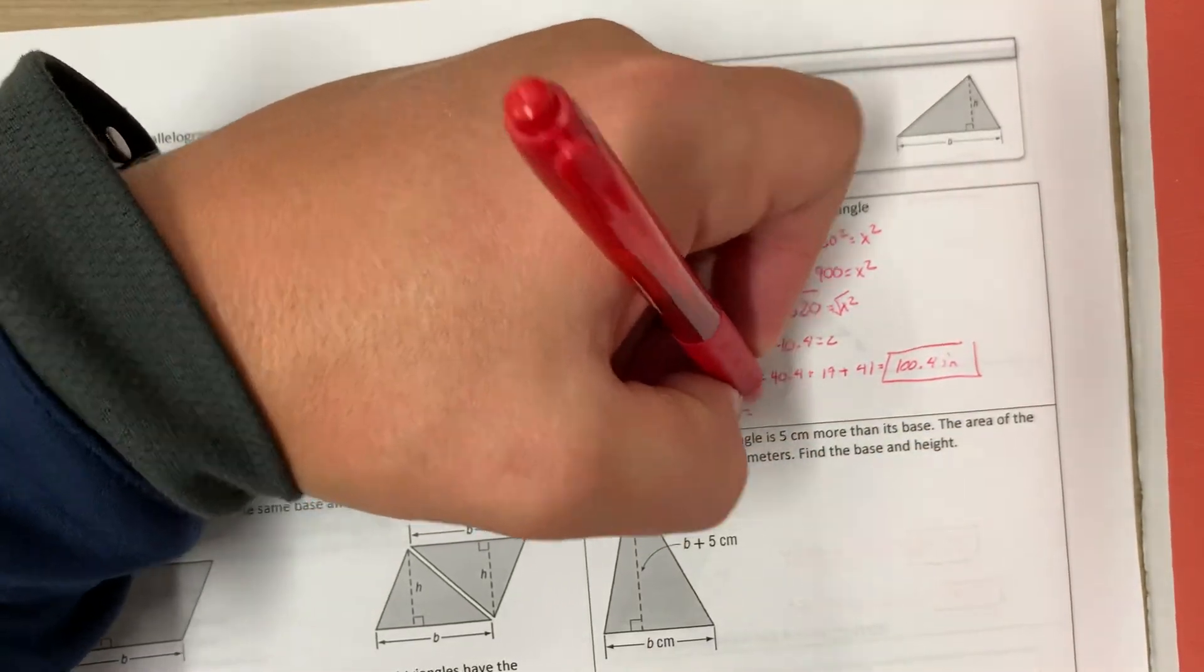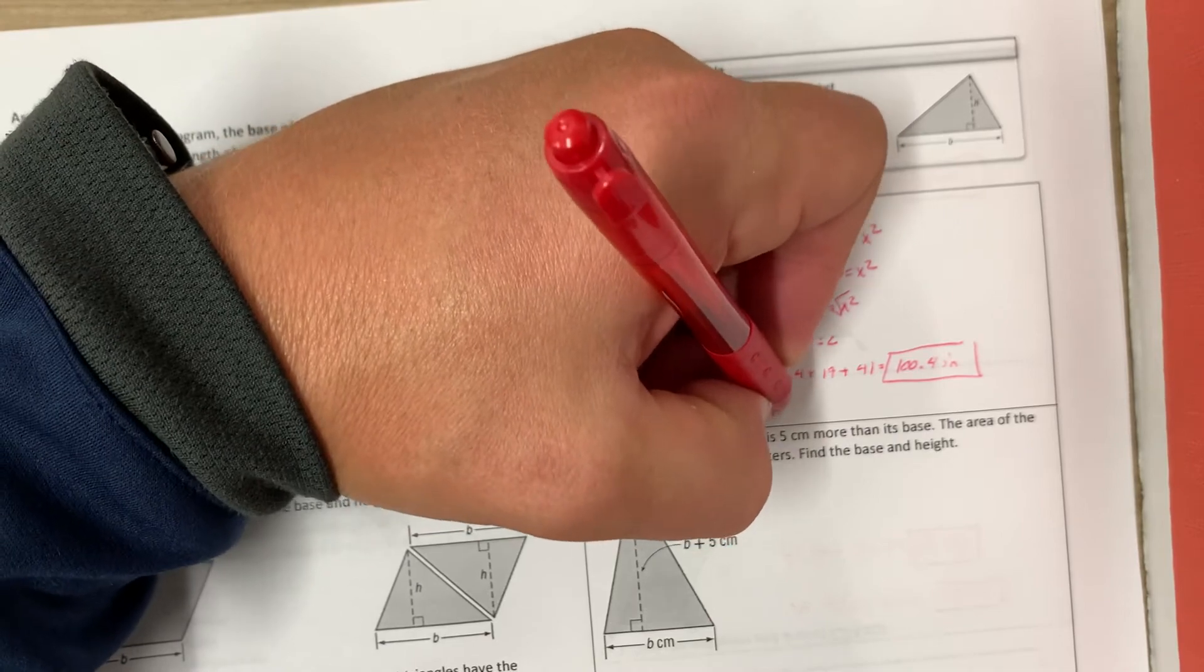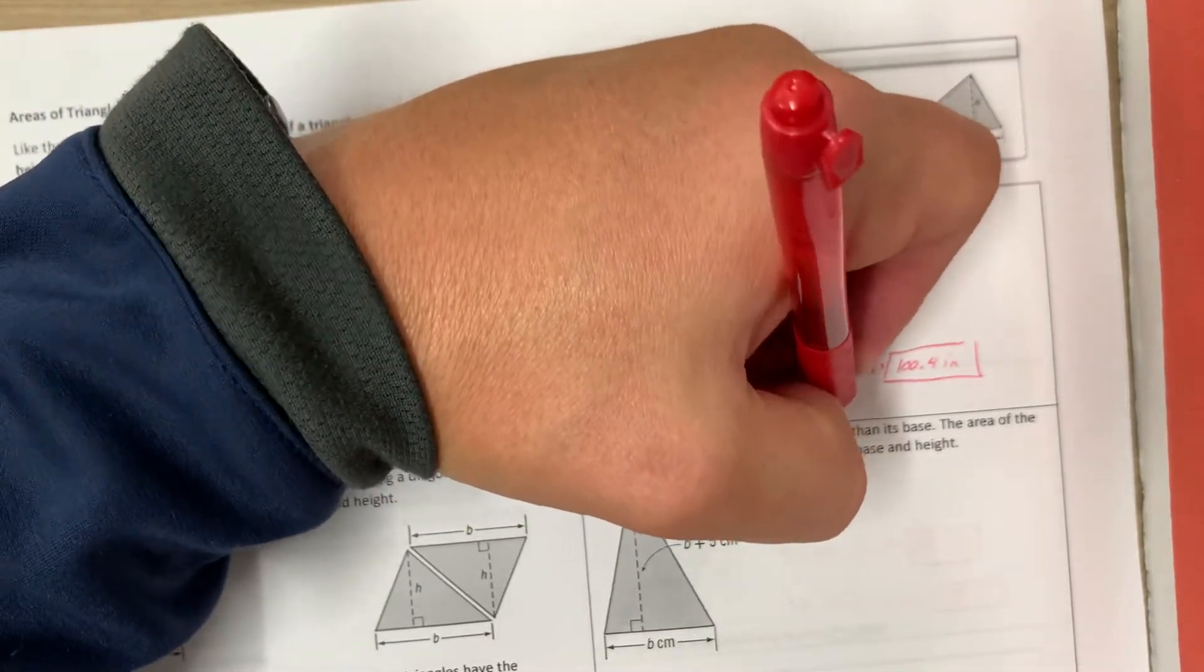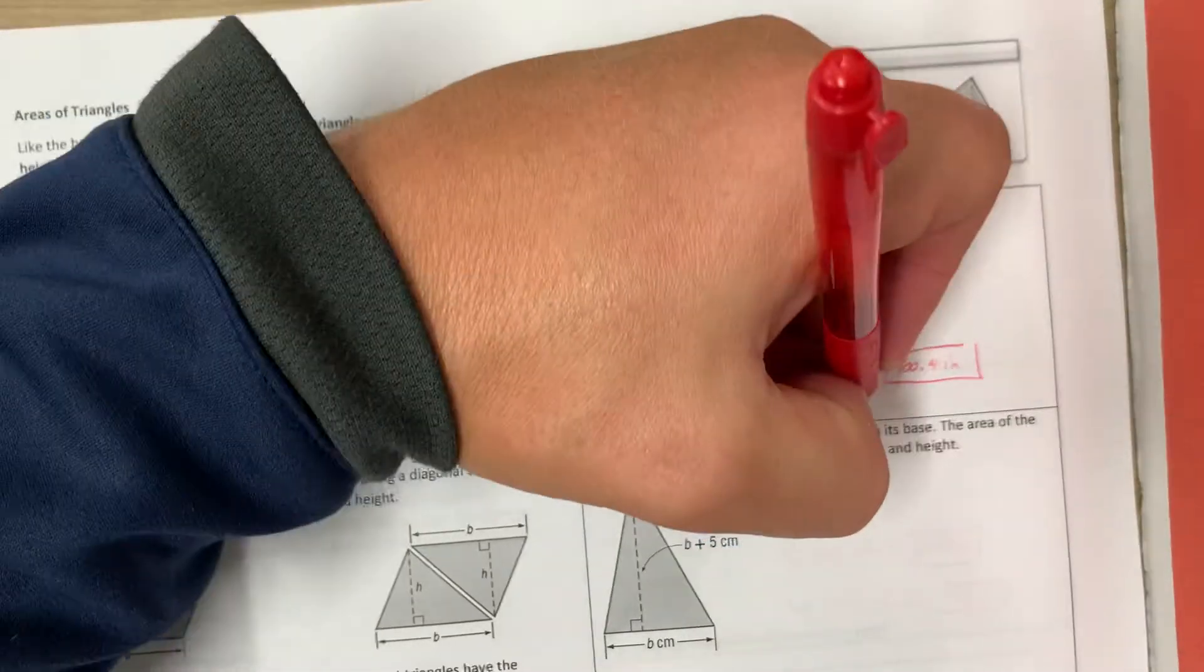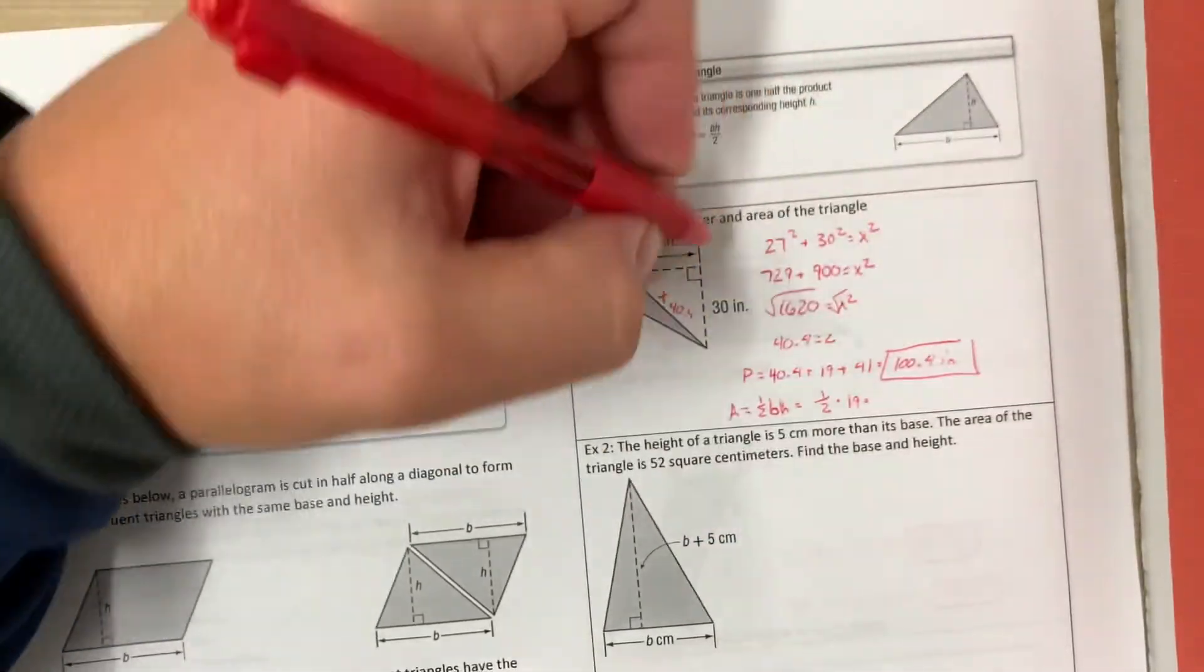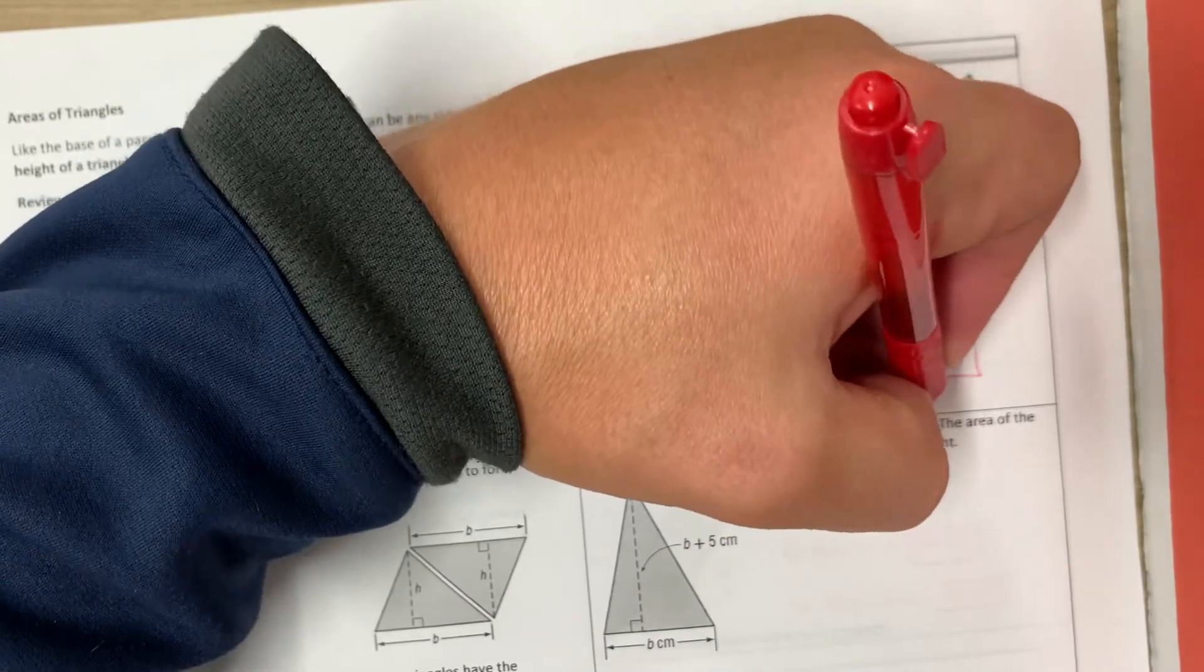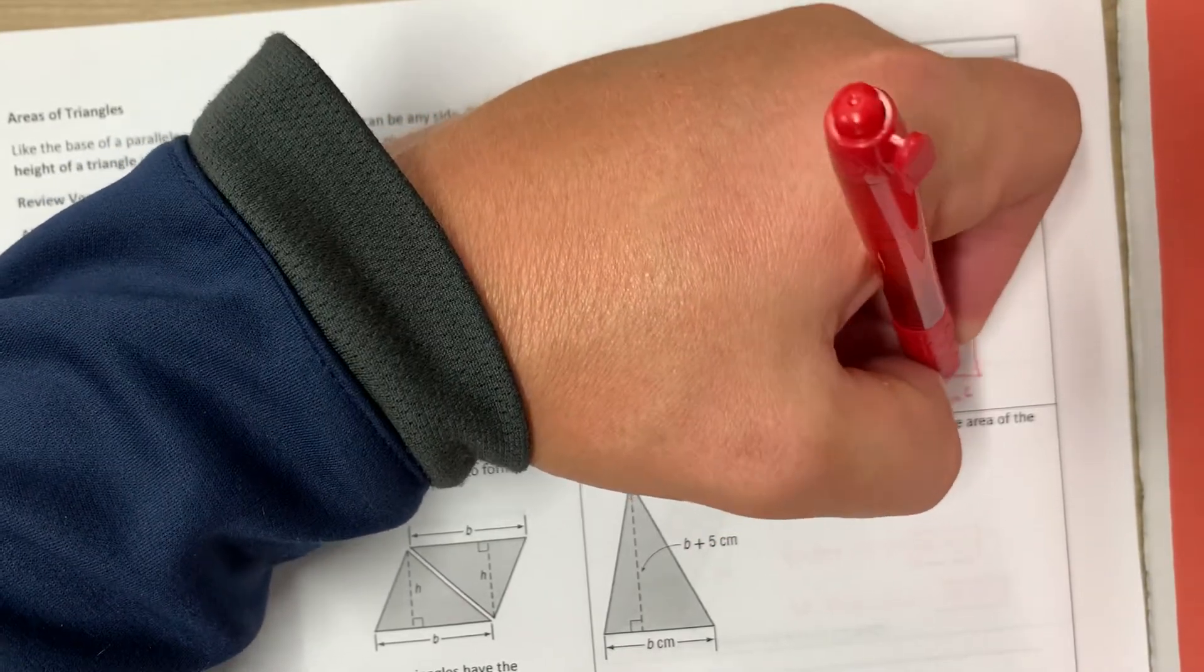The area is one half base times height, which would be one half. The base would be 19, and the height is 30, which is equal to 285 inches squared.